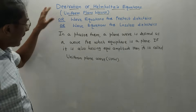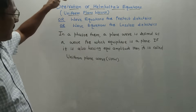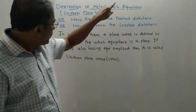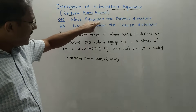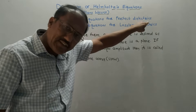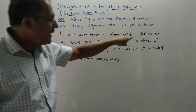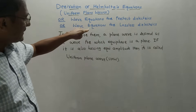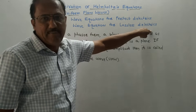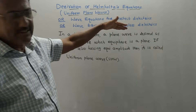First we will discuss the different names for this equation. It is called the Helmholtz equation. It is also called the wave equation for perfect dielectric medium, or it is also referred to as the wave equation for lossless dielectric medium — one and the same thing.